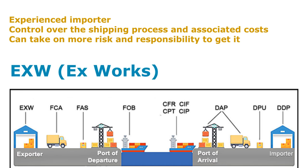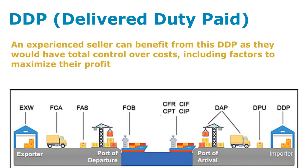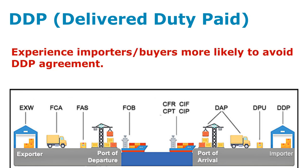While EXW places a minimum obligation on the seller, DDP represents the maximum obligation. It is the only rule that requires the seller to be responsible for import clearance and payment of duties and taxes. Therefore, the seller may also need to acquire an import license. An experienced seller can benefit from DDP as they have total control over costs, including factors to maximize their profit. However, importers or buyers with more experience are more likely to avoid this shipping agreement. We don't generally recommend DDP for ocean shipping; it is more common and makes more sense for air express or parcel shipping. We will introduce more potential risks about using DDP shipping from China in another video, as some DDP arrangements might involve illegal elements that could be harmful to your business.